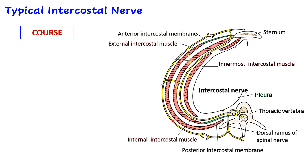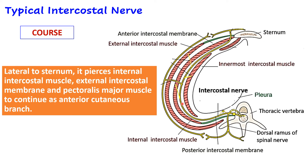The nerve runs in this neurovascular plane and forward. Just before the lateral border of the sternum, this nerve pierces the internal intercostal muscle and the external intercostal membrane (anterior intercostal membrane), which is the fibrous continuation of the external intercostal muscle. It also passes through pectoralis major and emerges as the anterior cutaneous nerve. This is the typical course of a typical intercostal nerve.